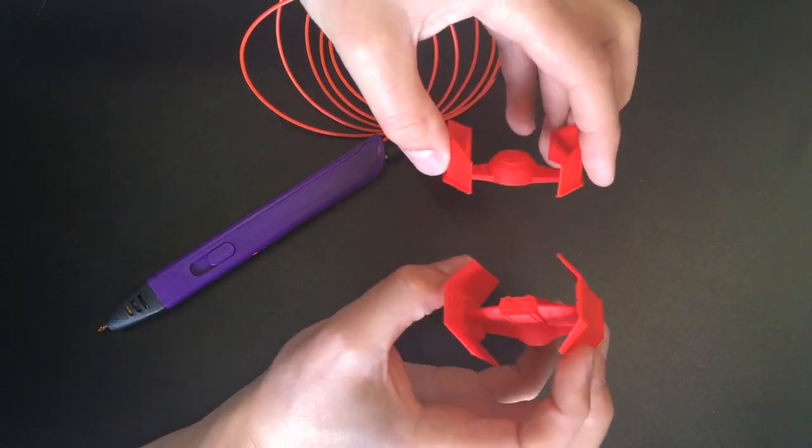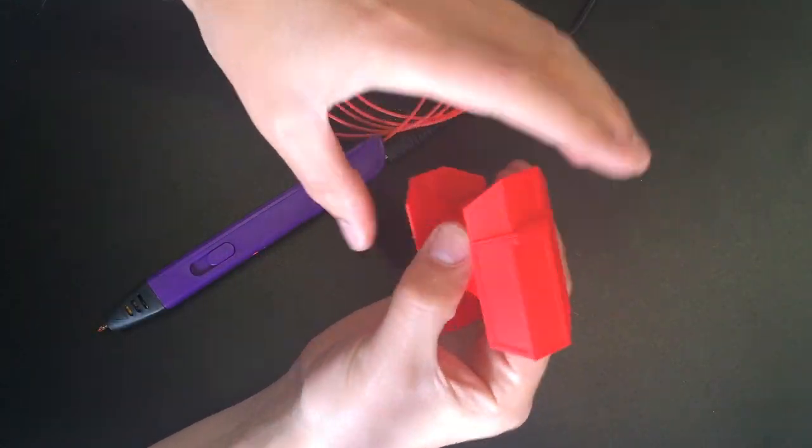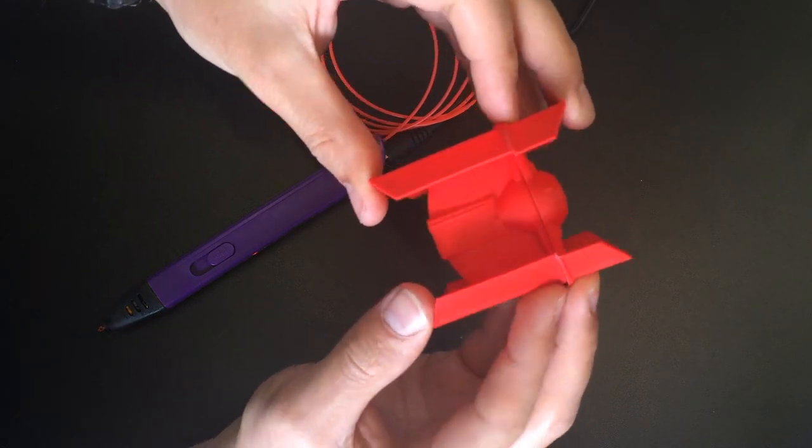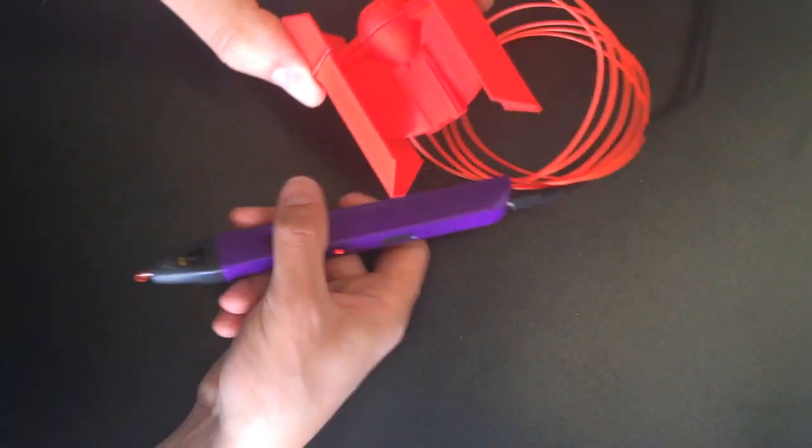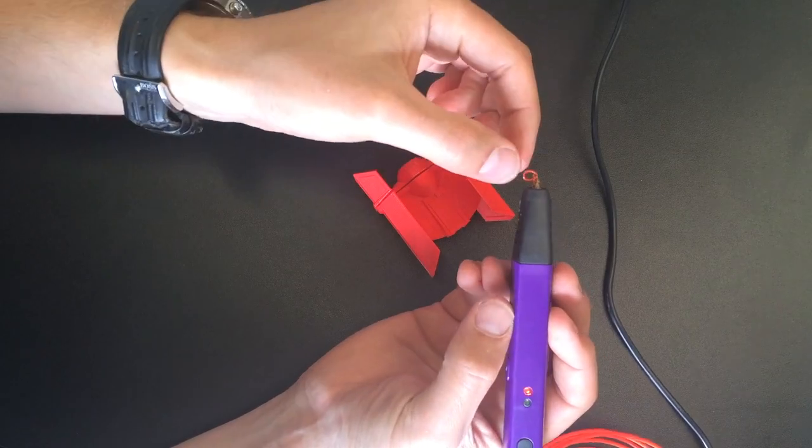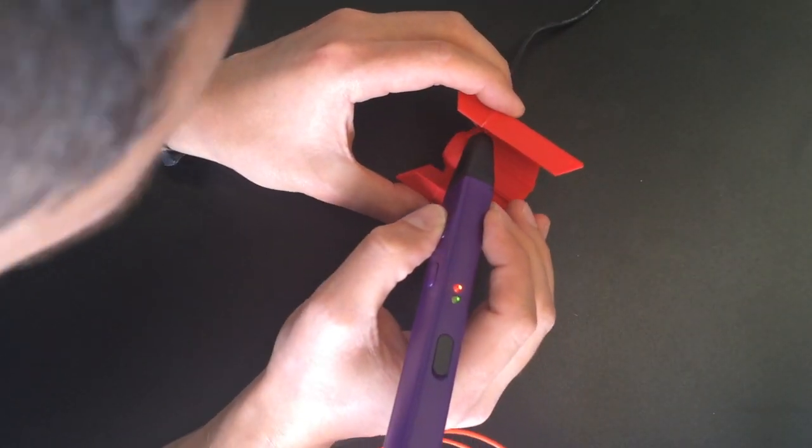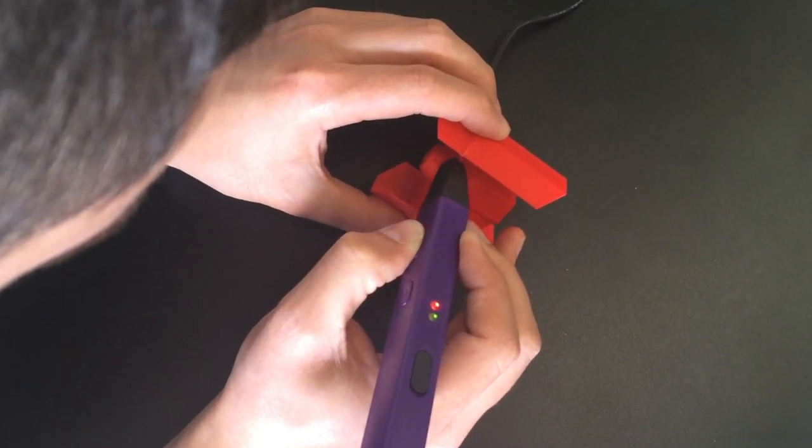Okay so here you can see I've got two parts. I've printed these on an Ultimaker 2 in ABS and you can see when I try and put them together there is a small gap so we're going to try and fill this in with ABS in our 3D printing pen.